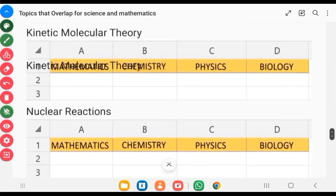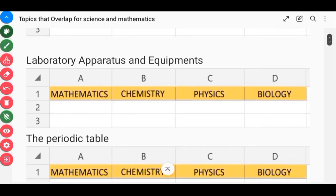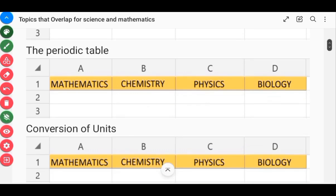We have level one, level two, and level three. We have the laboratory apparatus. Knowing the laboratory apparatus, most likely in the chemistry area, will also help you in physics.